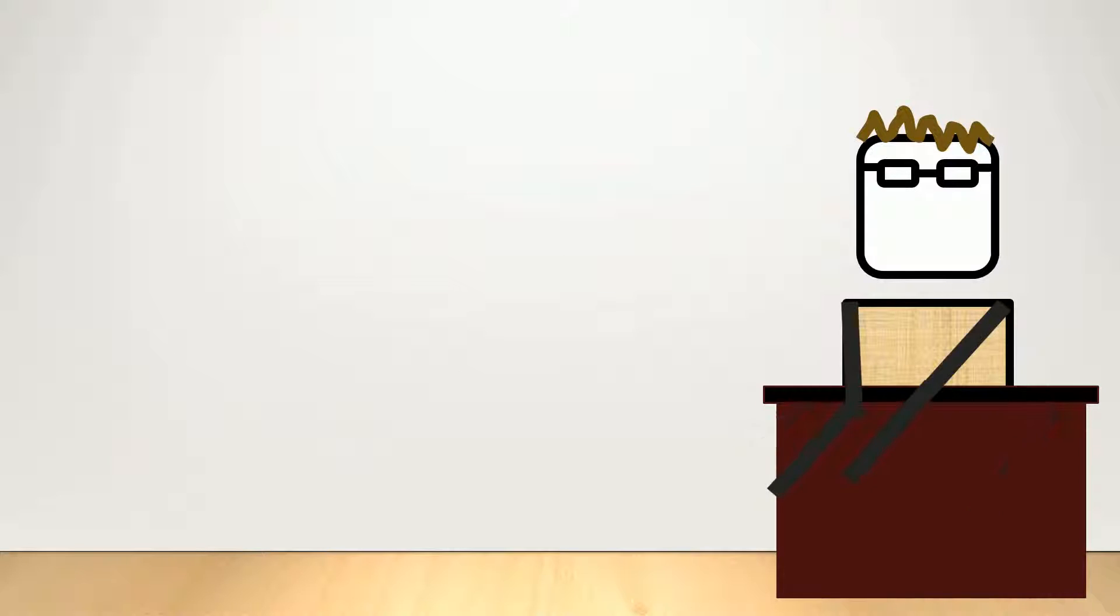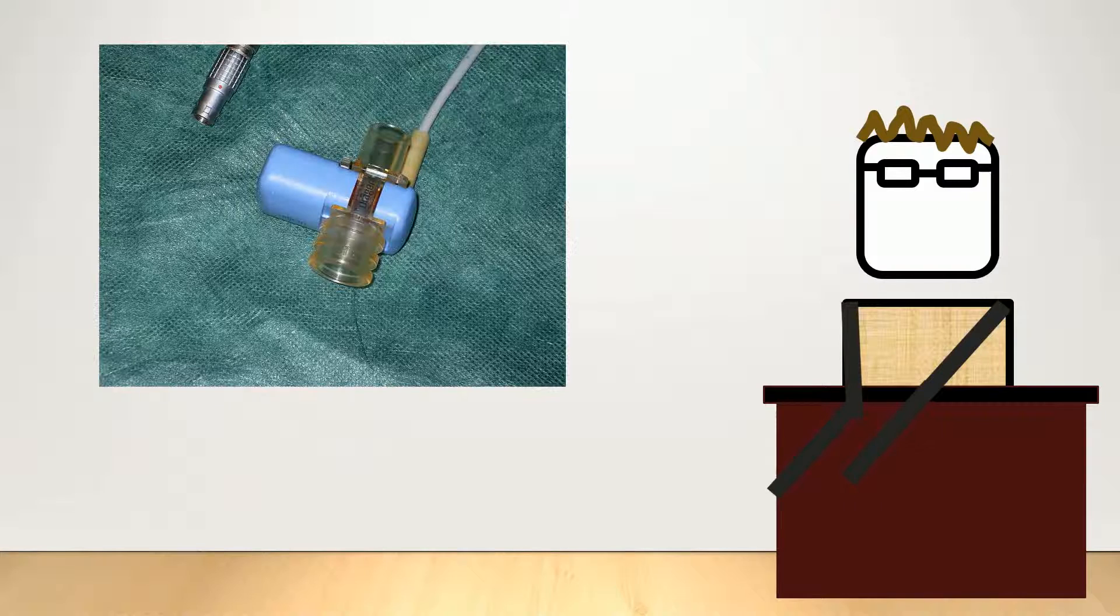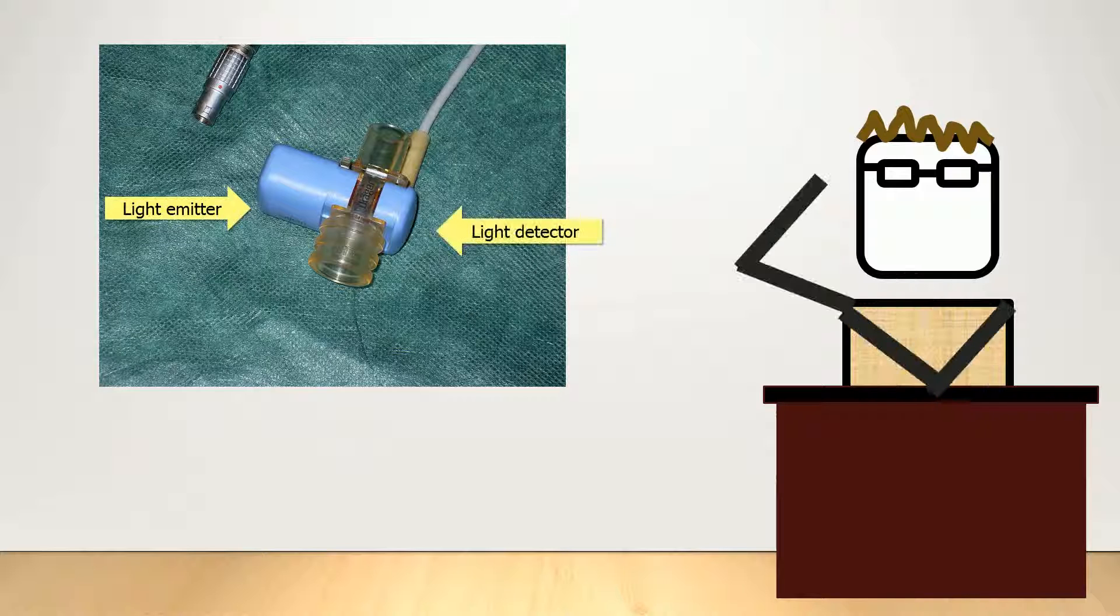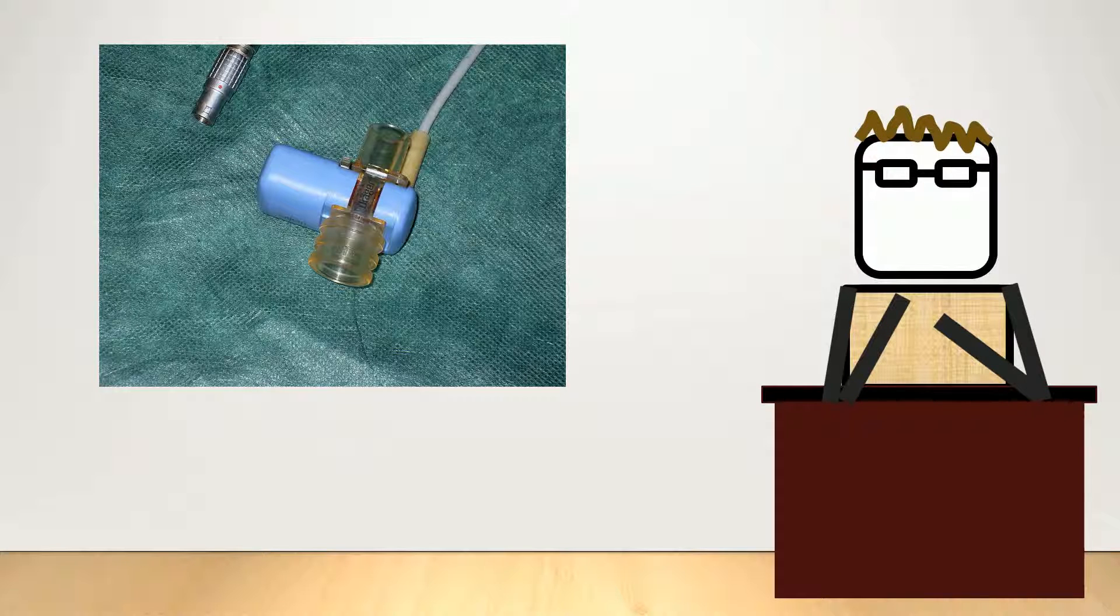Fortunately, we have capnography now. This is a non-invasive way to measure carbon dioxide levels in the exhaled breath. It works on the same principles as the oxygen saturation probe, with a light emitter and a detector on the opposite side of it. The difference, though, is that the light is in the infrared range, so when you look at the capnograph, you can't actually see the light.